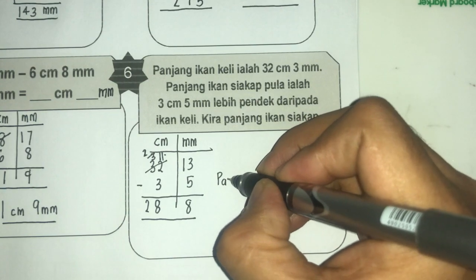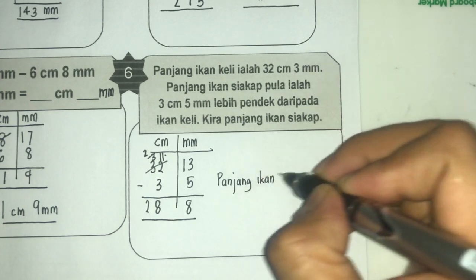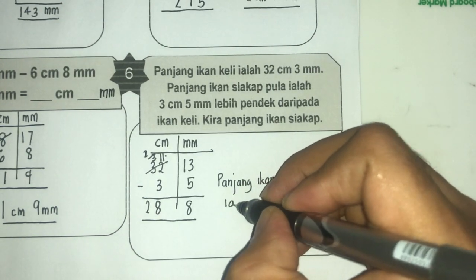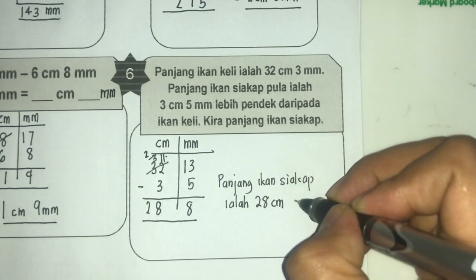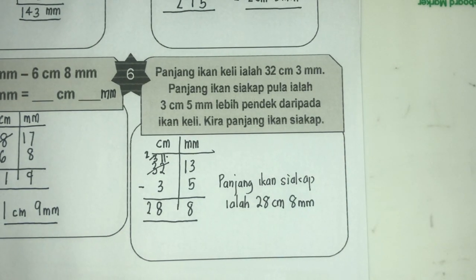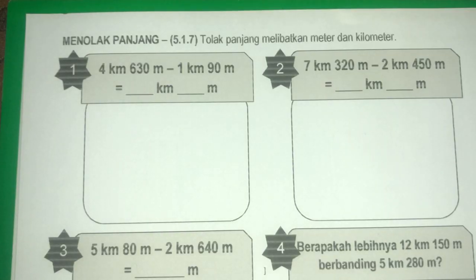Panjang ikan siakap ialah 28 cm 8 mm. Selesai untuk contoh ke-6 bagi kemahiran tolak panjang melibatkan milimeter dan sentimeter. Kita teruskan pula pembelajaran dengan kemahiran yang kedua melibatkan tolak panjang melibatkan unit meter dan kilometer.